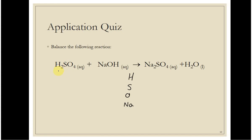So let's go through and count by element: hydrogen, sulfur, oxygen, and sodium. For hydrogens on the left, I have two plus this one over here, so I have three. I have one sulfur; four oxygens in sulfate plus the one in hydroxide, so that's a total of five; plus one sodium.